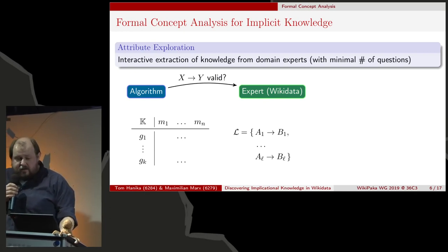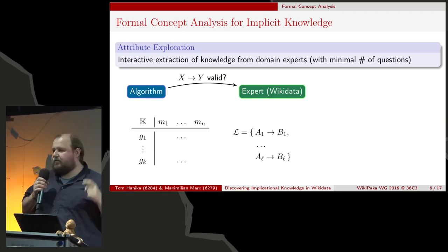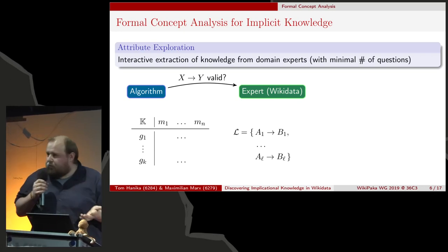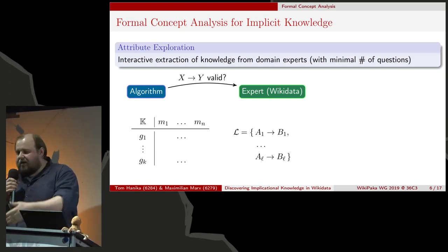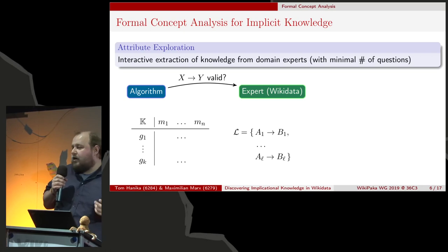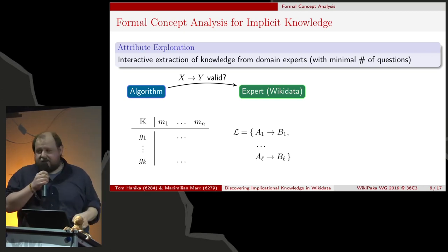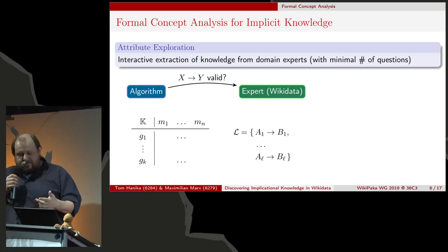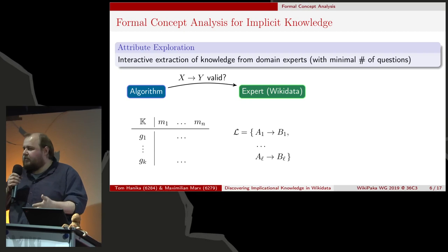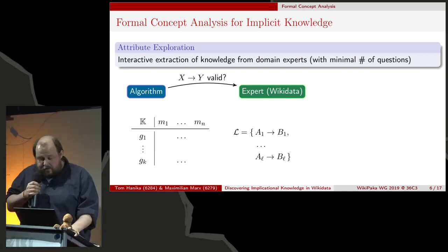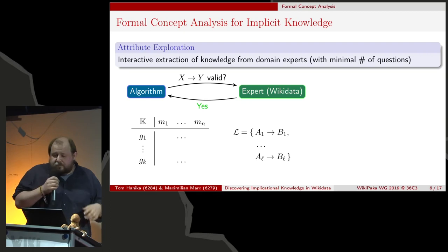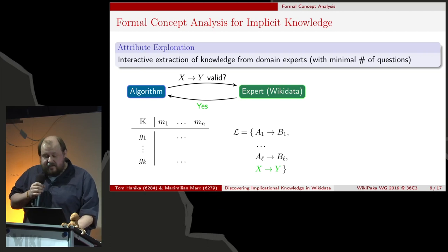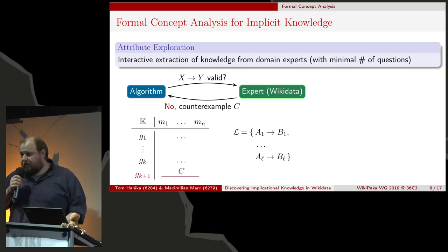All the algorithm does is ask: is this implication 'X implies Y' true? For example, is it true that an animal which is a mammal and venomous lays eggs? The expert — Wikidata — can answer this via a query. If no counterexamples are found, it answers 'yes, that may be true.' If the implication is not true, it answers 'no, here's a counterexample' — for example, a wet street does not mean it rained; it could be a cleaning car.